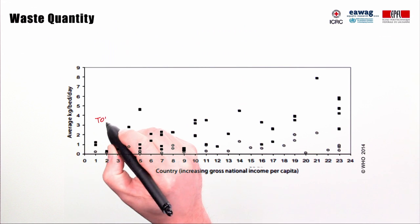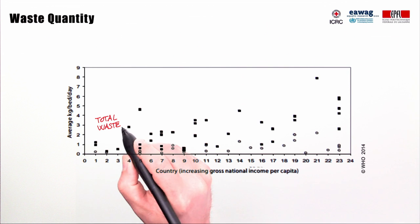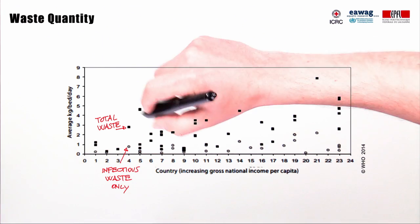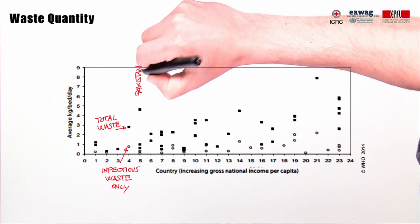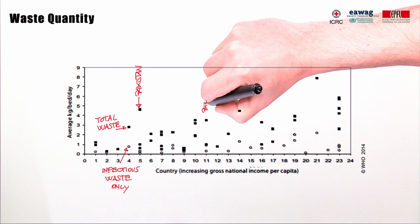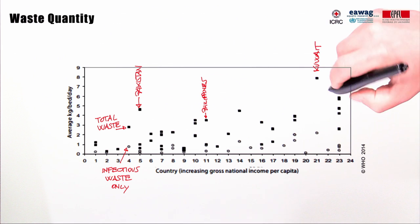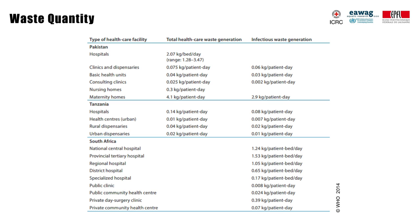Waste quantity varies a lot according to the country. This WHO chart shows how total medical waste — the squares — and the infectious waste — the dots — vary according to gross national income. We are talking about a variability that spans from six to even eight kilos per bed per day down to just one. Another factor is the type of health facility considered. This table, also from a WHO publication, illustrates for three different countries the average waste production rates per type of facility, and again you can see really big variation.